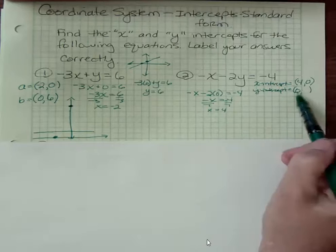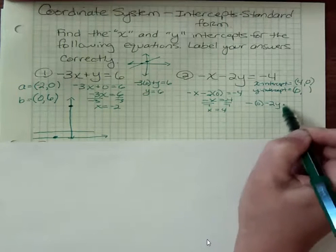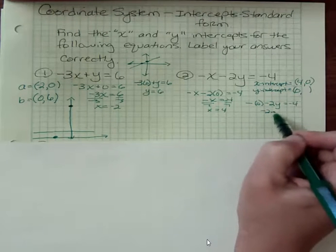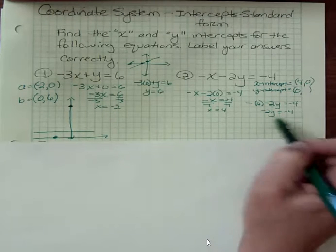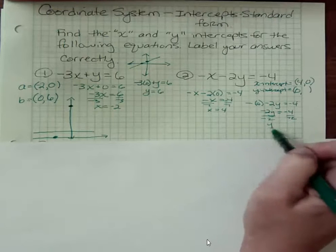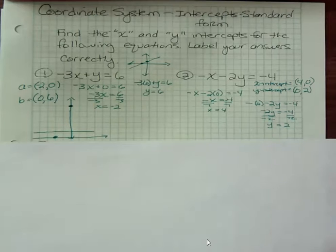And now my y intercept, if x is zero, negative times zero minus two y equals negative four. Obviously, that just drops out. Negative two y is negative four. And dividing both sides by negative two, I get y equals two. And so I have my two intercepts.